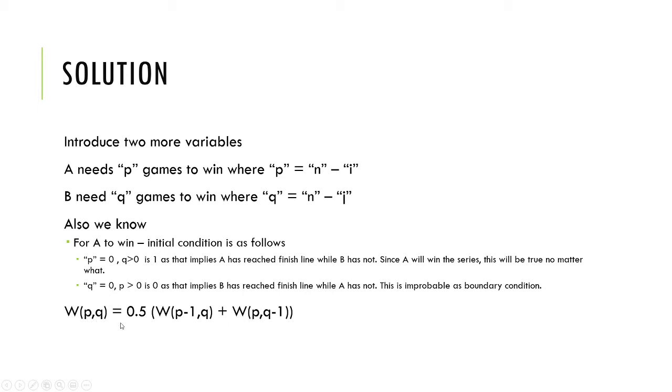Here's the equation, here's the probability equation that connects you to the past. Stay on this slide for a minute or two till you understand both these concepts: the boundary conditions—what does this mean. Boundary conditions are the most important and most confusing part of this problem. A has to win, and for A to win you must reach a point where A has achieved the right number of games, which means p equals 0.